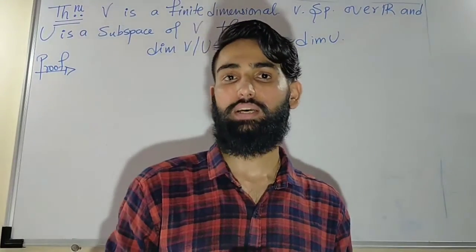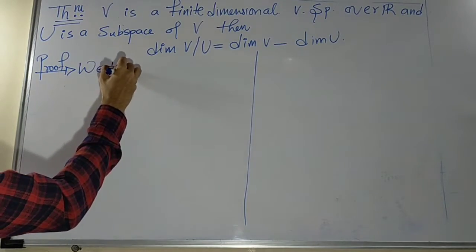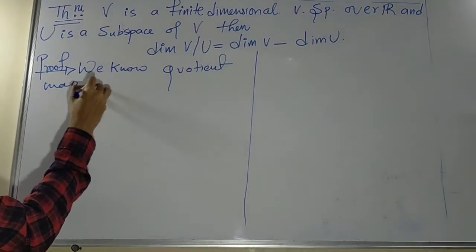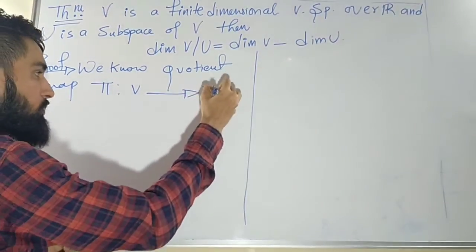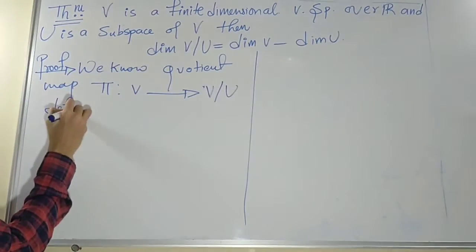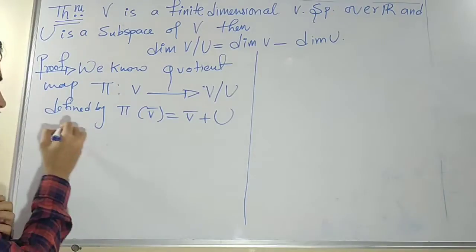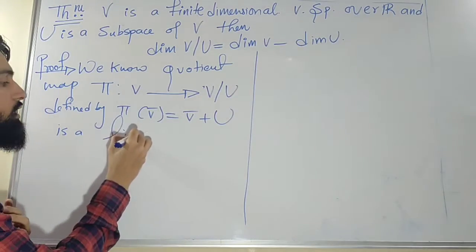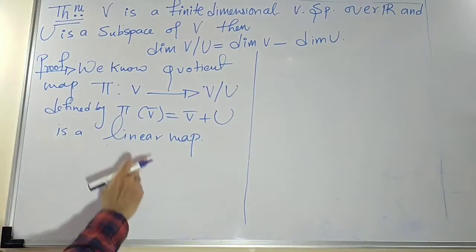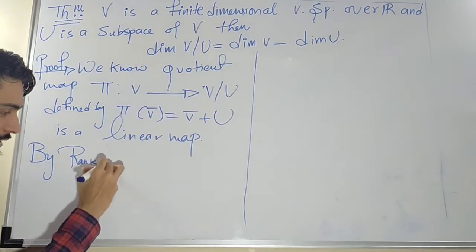As I said in the last lecture, we'll be using the quotient map. We define π from V to V/U, where π of v is v plus U. This is a linear map — in the last lecture we proved it is a linear map. Since it is a linear map, by the rank-nullity theorem we can proceed.